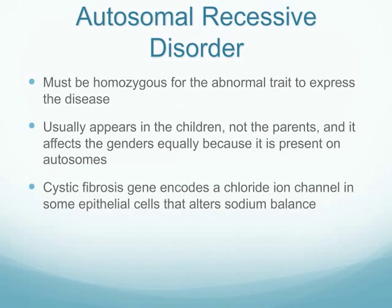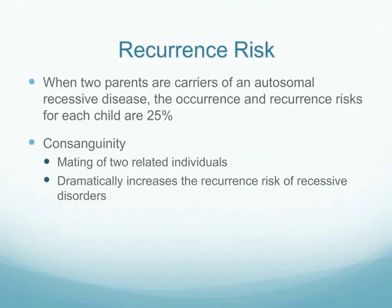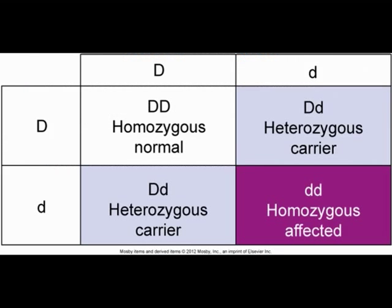With an autosomal recessive disorder, the individual must be homozygous for the abnormal trait. This usually occurs in the children rather than the parents, because both recessive genes must be present. Cystic fibrosis is an example. The recurrence risk can be figured using a Punnett square — when both parents are carriers, the recurrence risk is 25%. The Punnett square shows one homozygous affected, two carriers, and one homozygous normal outcome.